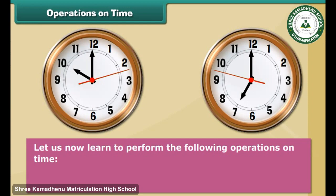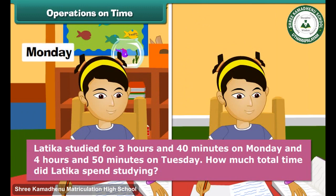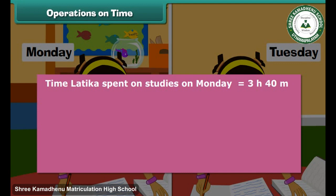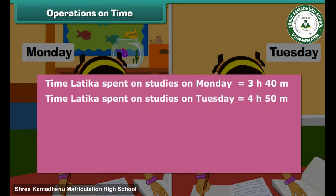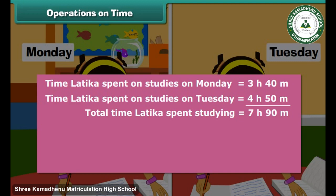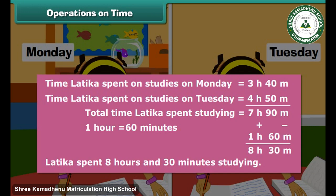Let us now learn to perform addition operations on time. Latika studied for 3 hours and 40 minutes on Monday and 4 hours and 50 minutes on Tuesday. How much total time did Latika spend studying? Time on Monday: 3 hours 40 minutes. Time on Tuesday: 4 hours 50 minutes. Total: 7 hours 90 minutes. Since 1 hour equals 60 minutes, we subtract 60 from 90 and add 1 to 7 hours. Therefore, Latika spent 8 hours and 30 minutes studying.